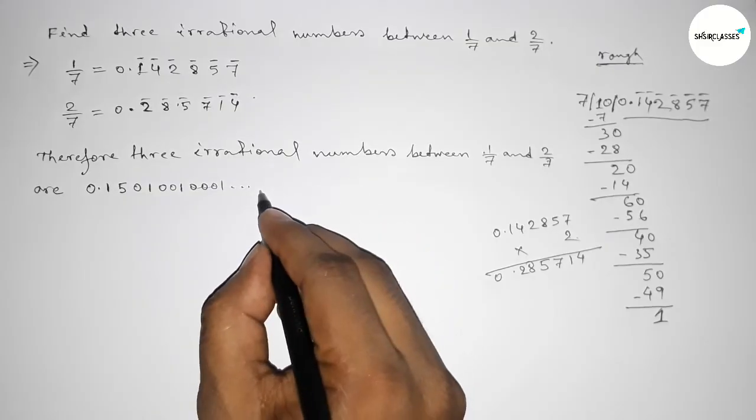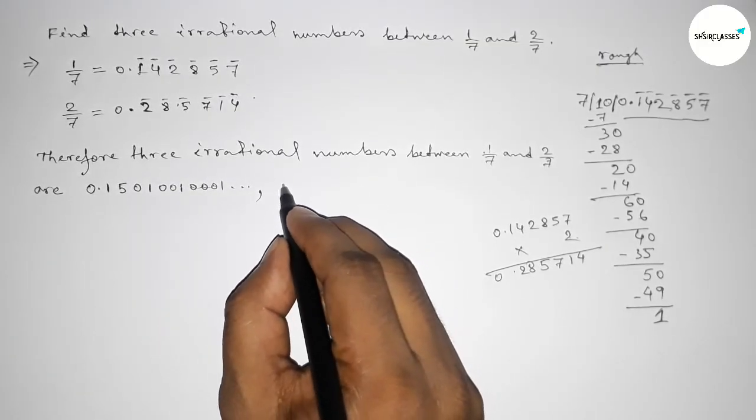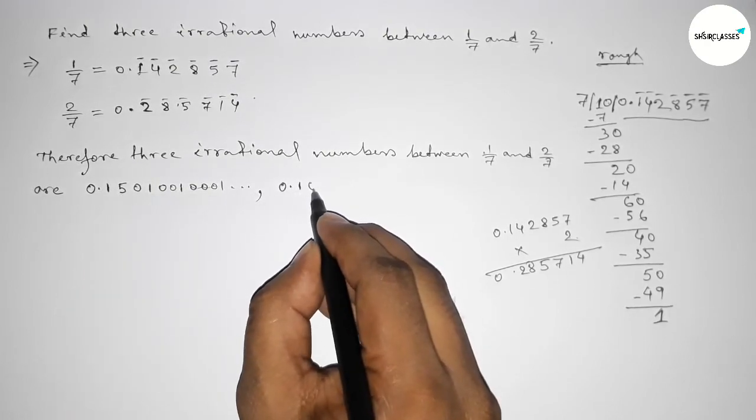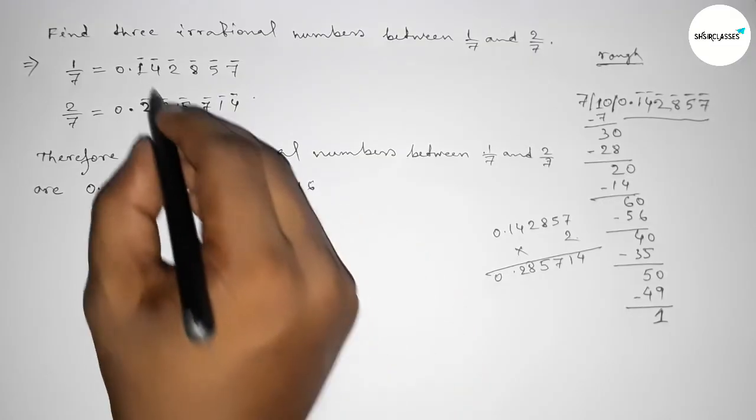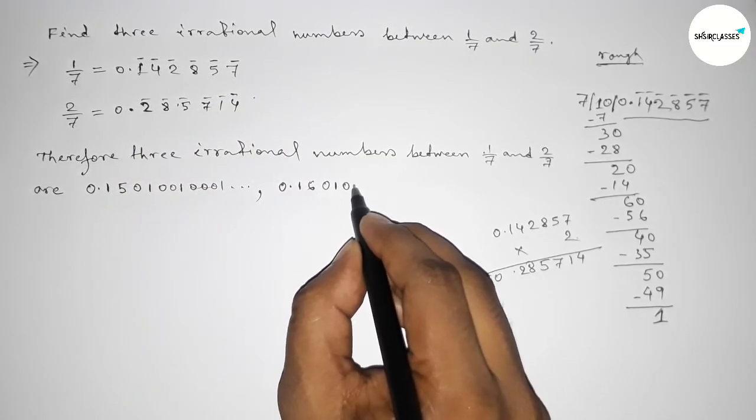This is one irrational number. Now the second irrational number: 0.1, taking 6 which is greater than 4, and similarly taking 0, 1, double 0, 1, triple 0, 1, and continuous.